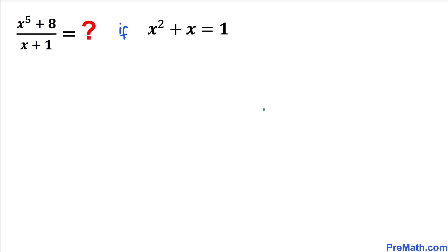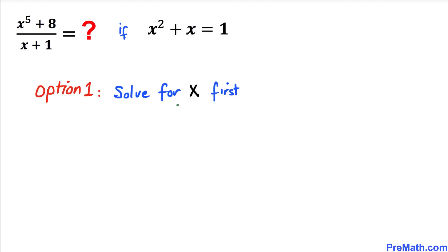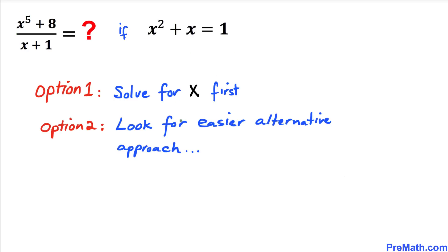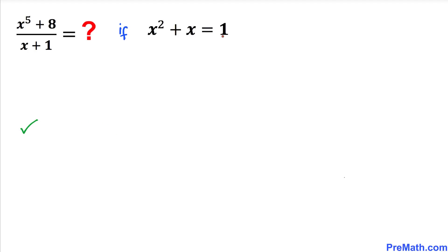Let's get started with the solution. We have two options: the first is to solve for x first and then find the value of the rational expression. The second option is to look for an easier alternative approach to avoid solving for x first. I have decided to take this second option and think outside the box.